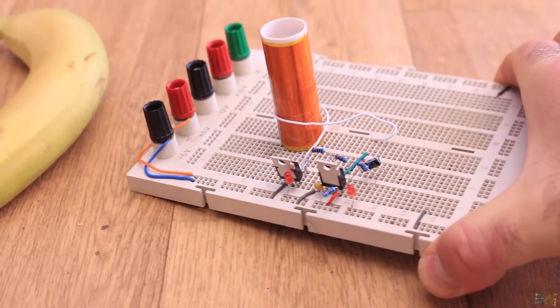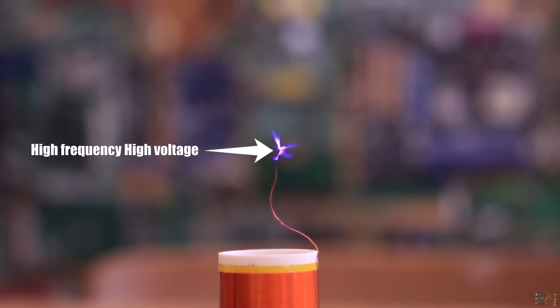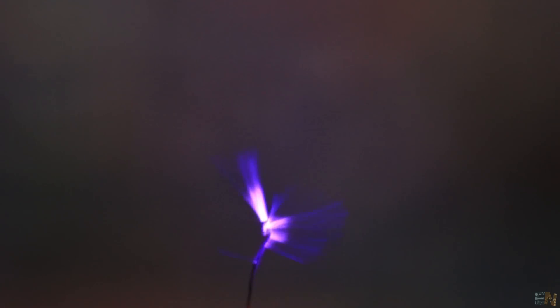This is a so-called Tesla coil, but a very small one. It generates a high frequency, high voltage inside of the main coil and that ionizes the air at the end of the copper wire, and the air will glow due to the created arcs.